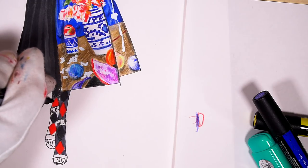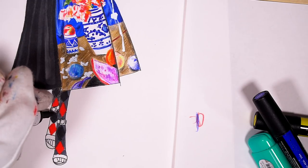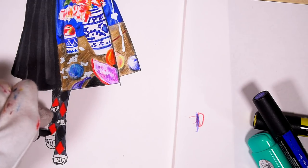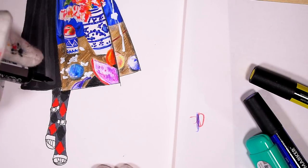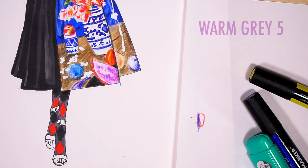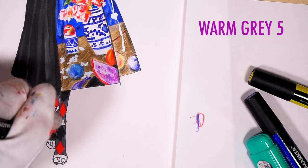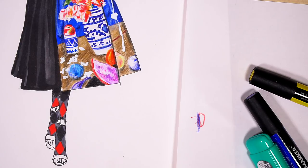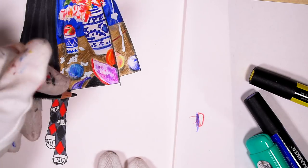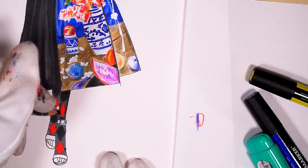We're leaving her toes because they're open, so we're not coloring there. Adding some shadows under her skirt with warm gray 5. Next take black pencil and add some shadows on the sides of her tights.